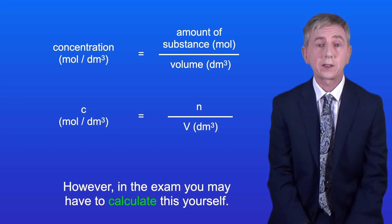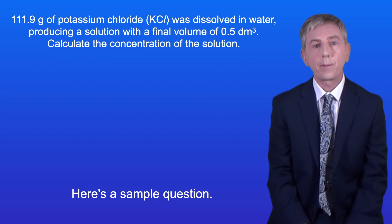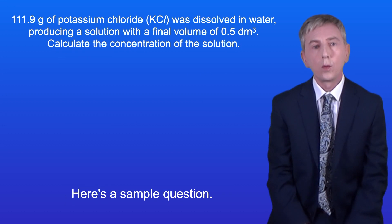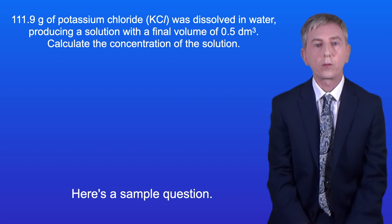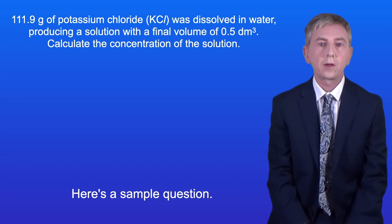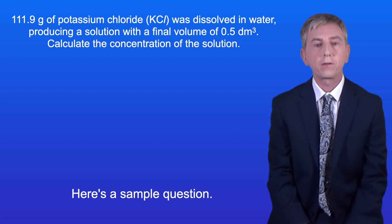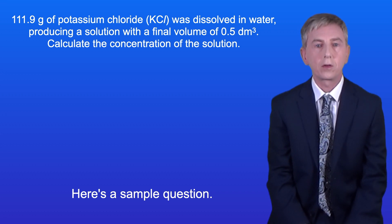However, in the exam you may have to calculate this yourself. Here's a sample question: 111.9 grams of potassium chloride was dissolved in water, producing a solution with a final volume of 0.5 decimetres cubed. Calculate the concentration of the solution.